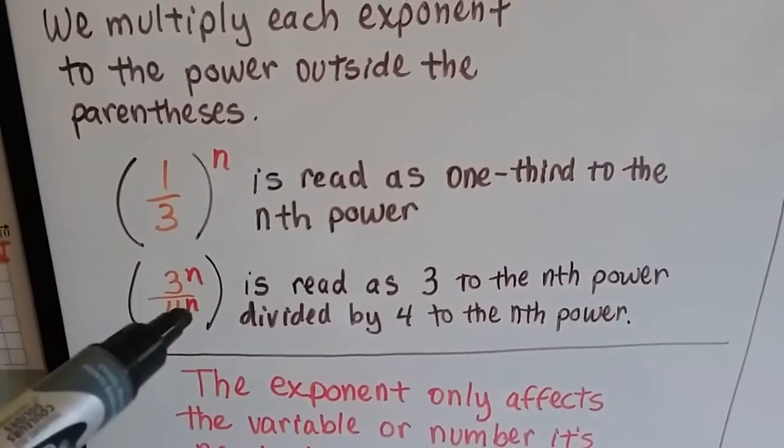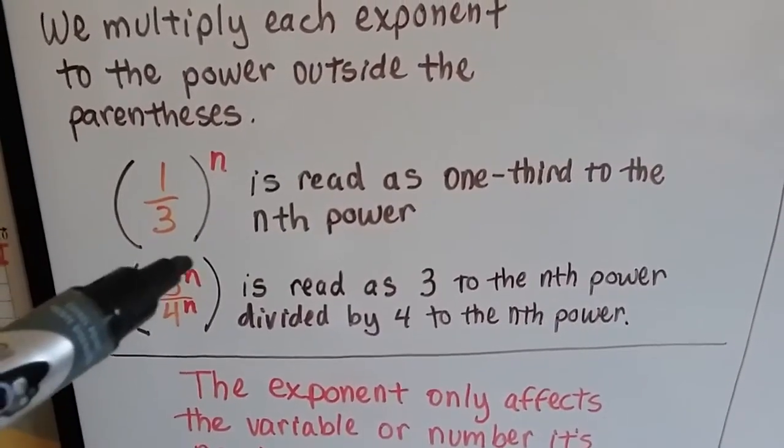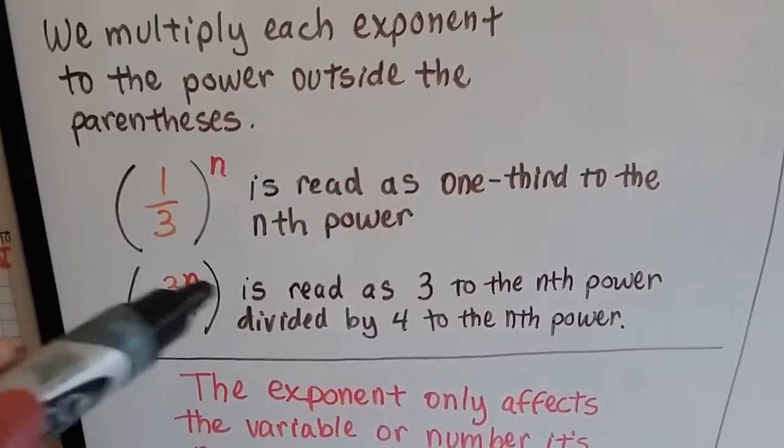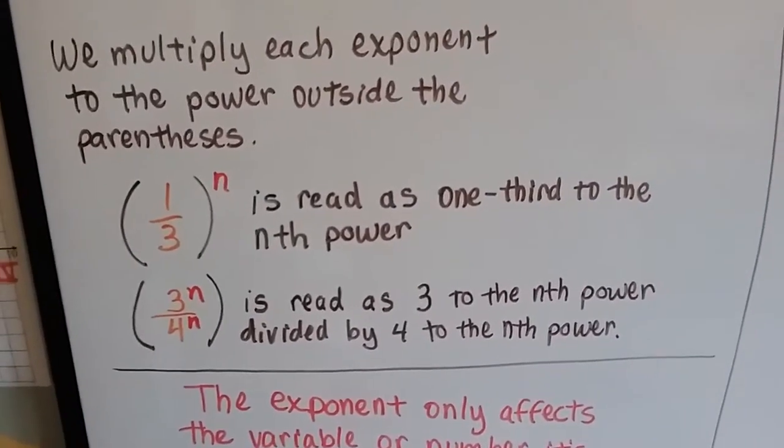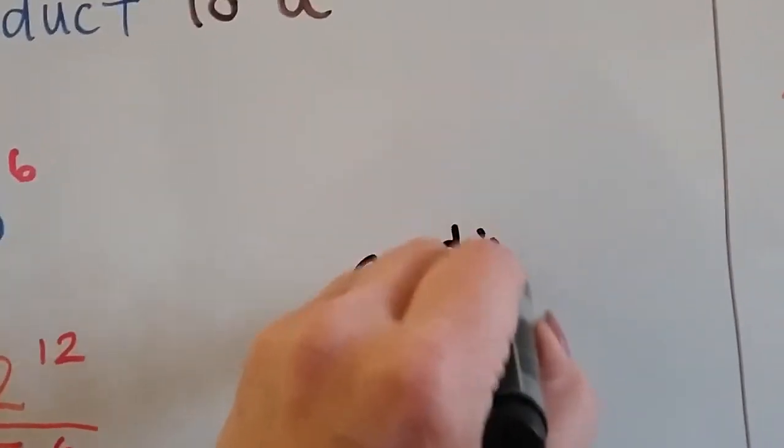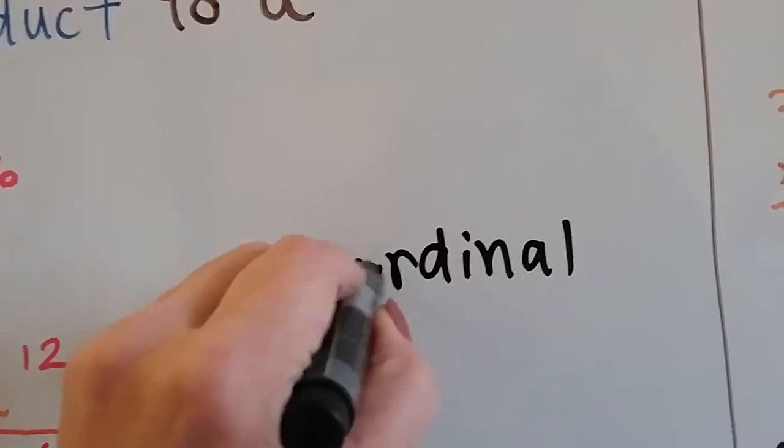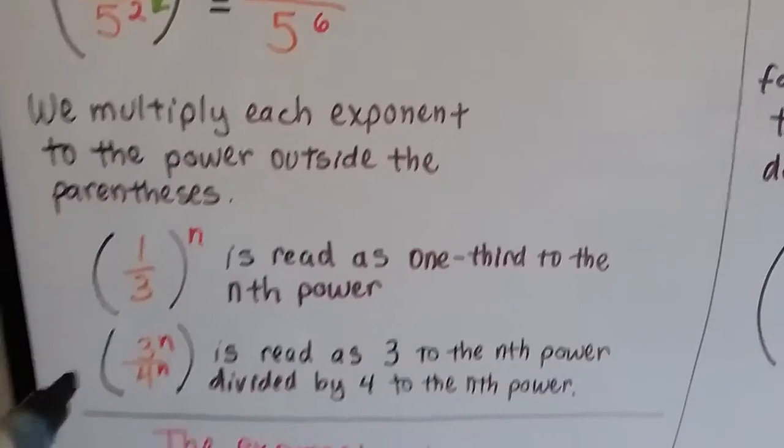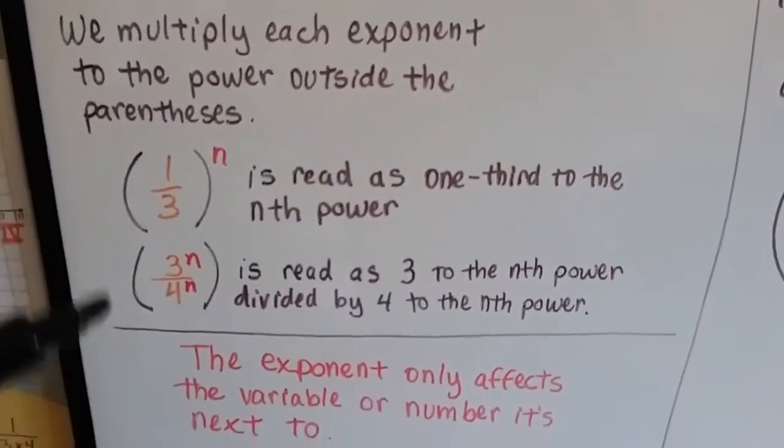And if these were actual numbers, we could say like 3 to the second power over 4 to the second power, or whatever the power is. And we do it in ordinal numbers. Ordinal numbers are numbers that are in order. Ordinal numbers are like grade school, 1st, 2nd, 3rd, 4th, 5th. So we would read those in ordinal numbers.